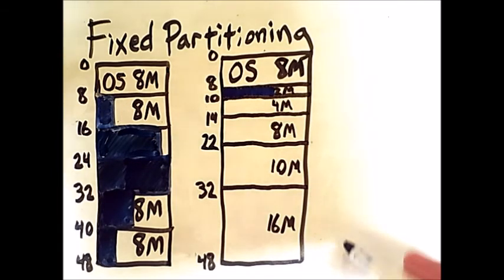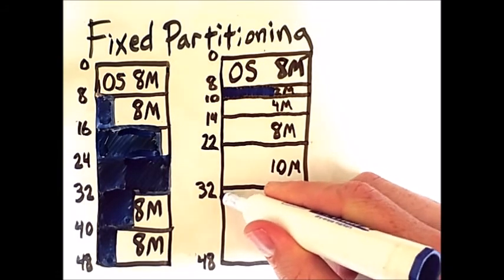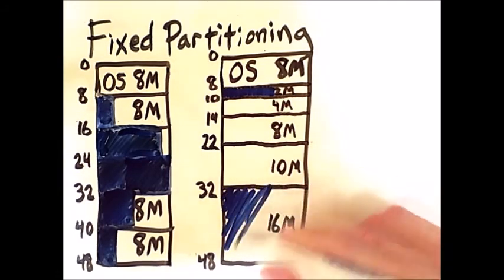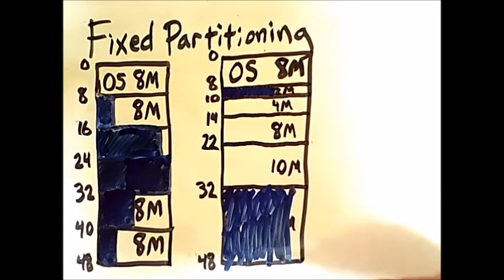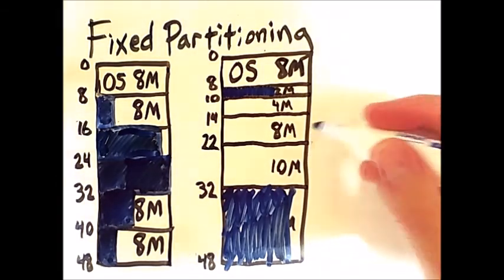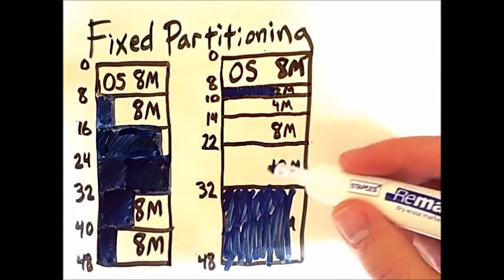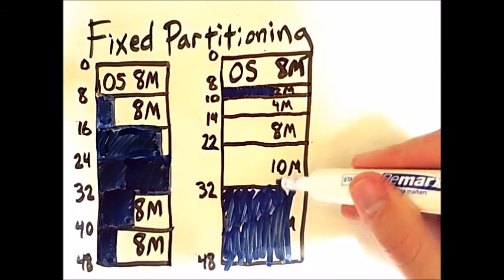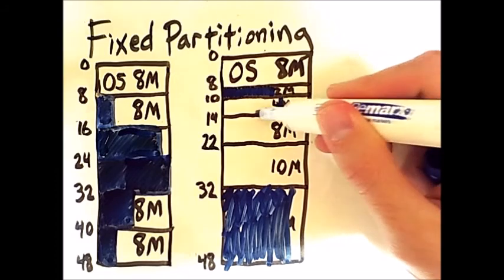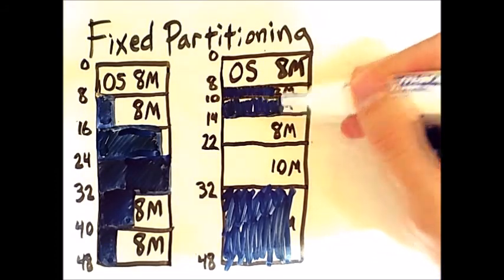In particular, if I put large processes in the large partitions and I put smaller processes in the smaller partitions, then in general I will tend to have less overall fragmentation across my memory.